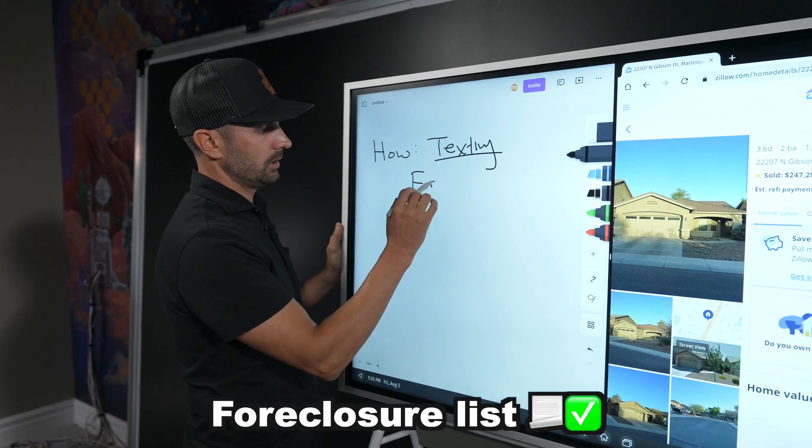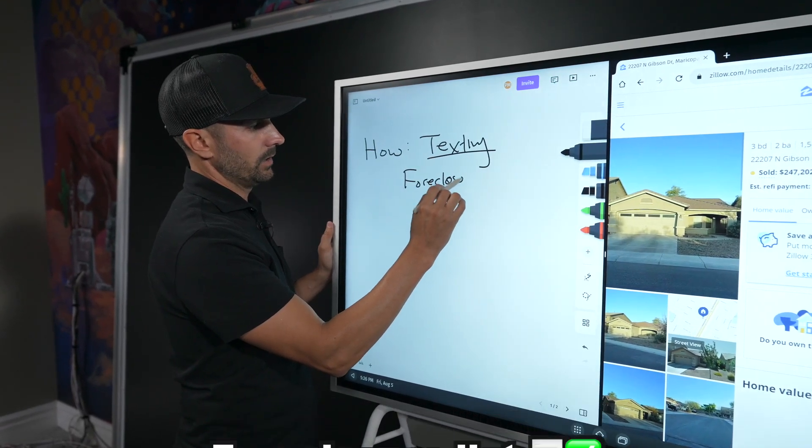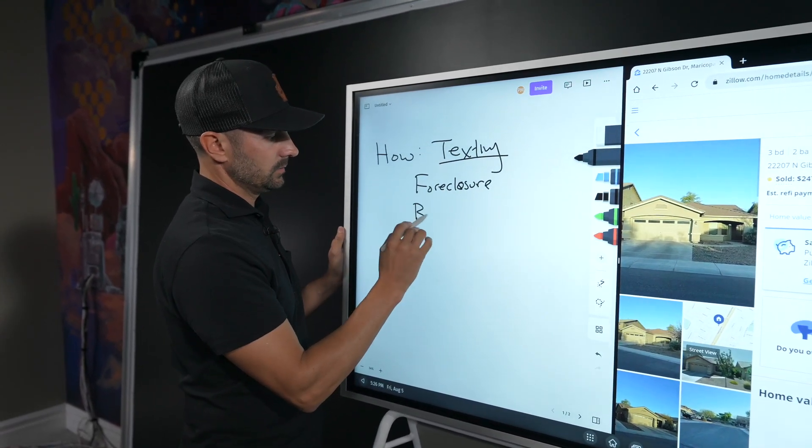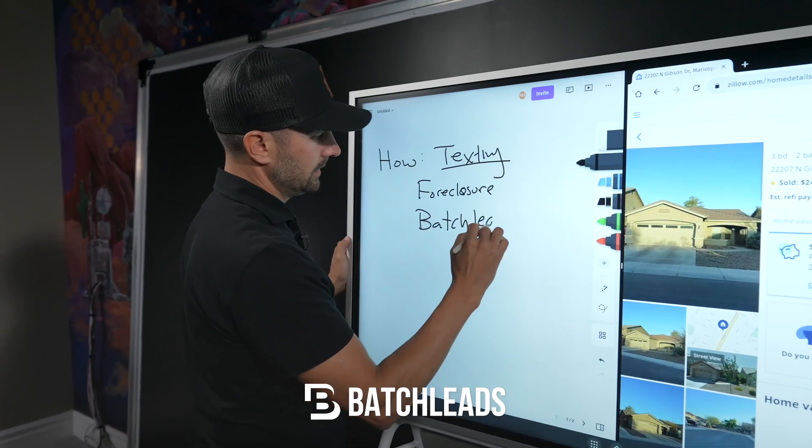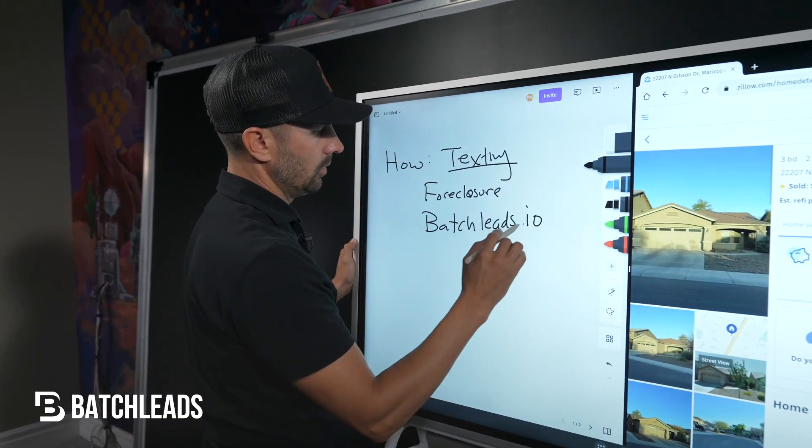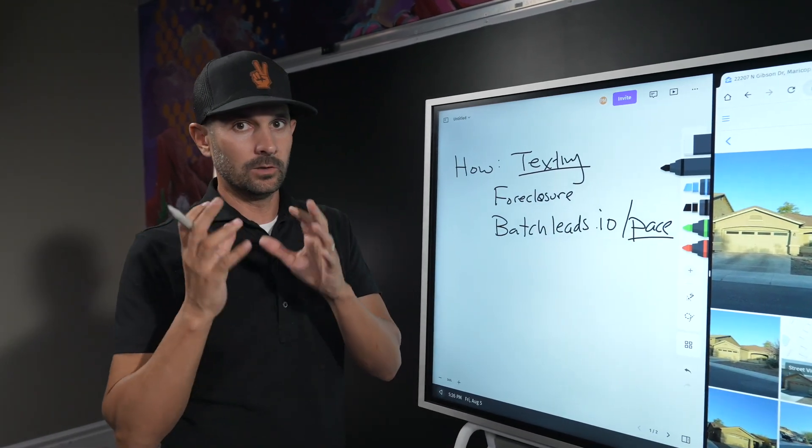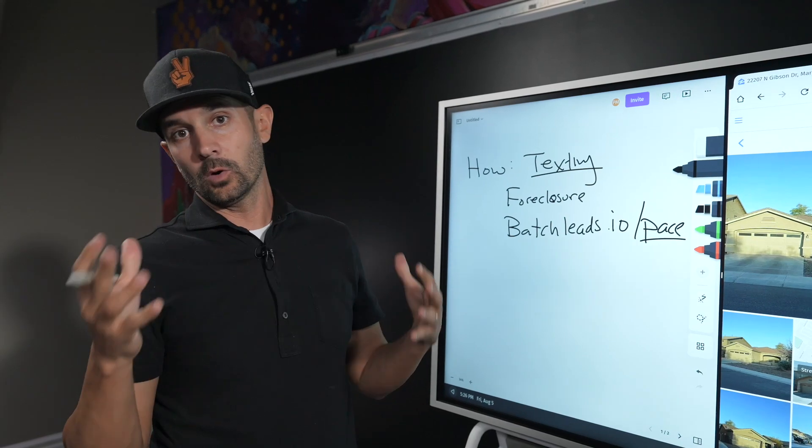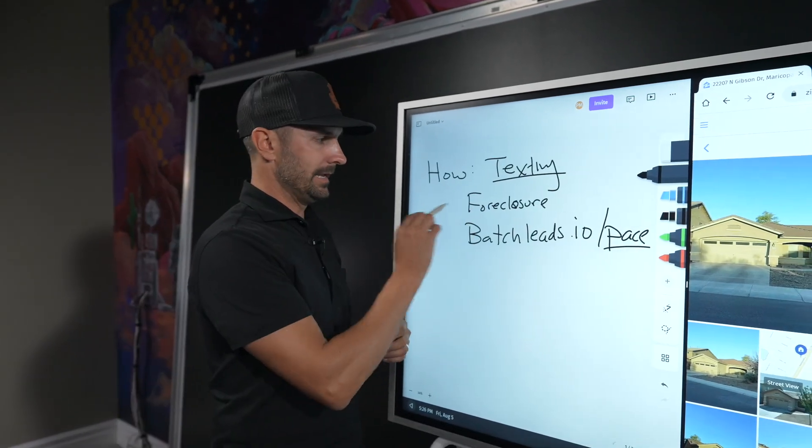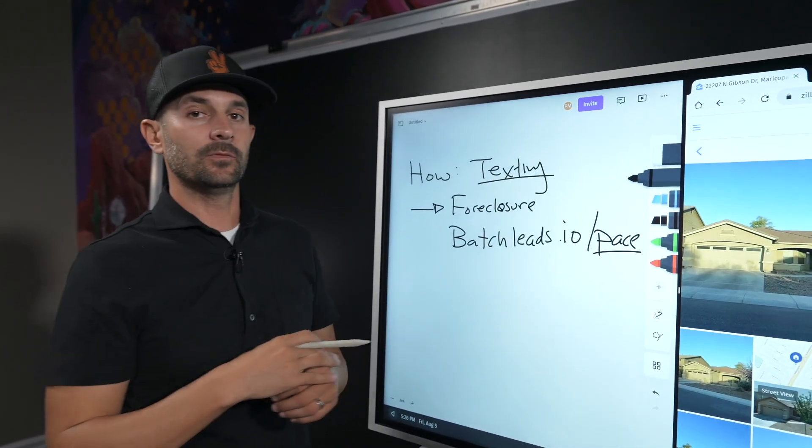We texted the seller from a foreclosure list. We get them from batchleads.io/pace if you guys want a discount. We go to batchleads.io, download all the foreclosures and people that are in foreclosure in our local market. We then send them a text message asking if they're looking to sell their house.